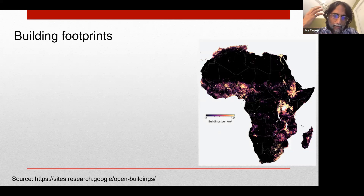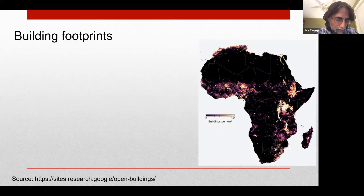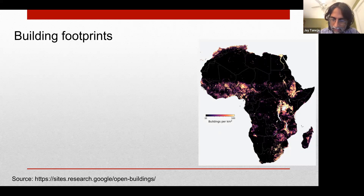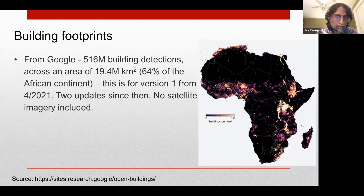Just as in the population space, we also want to understand the building space. The growth in pre-trained neural network models and the availability of increasingly better and more frequent satellite imagery has enabled a number of organizations to work on topics in this space. One example is the Google Open Buildings dataset, released first in 2021, with two additional refreshes since, where they've located all buildings across the continent that they can find from satellite imagery — 516 million buildings on the continent in 2021. They've since expanded to South and Southeast Asia, as well as South America.